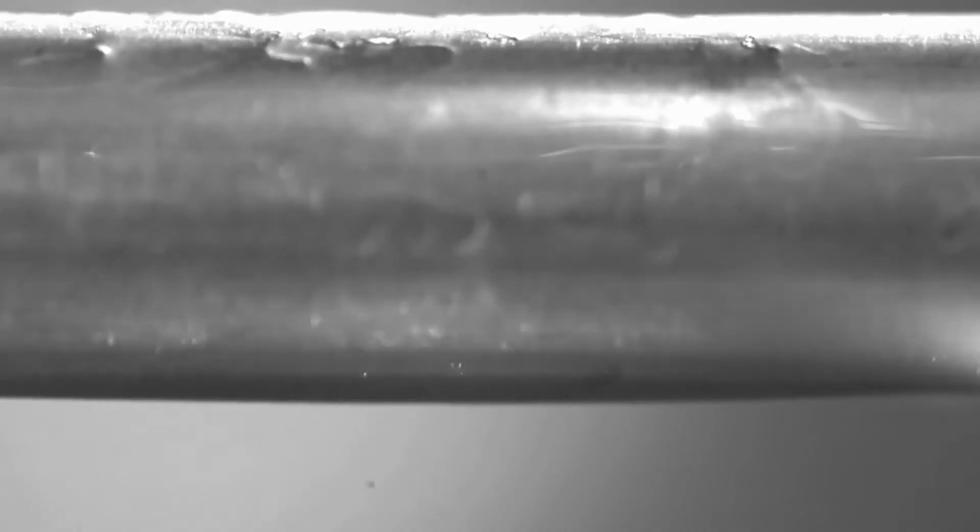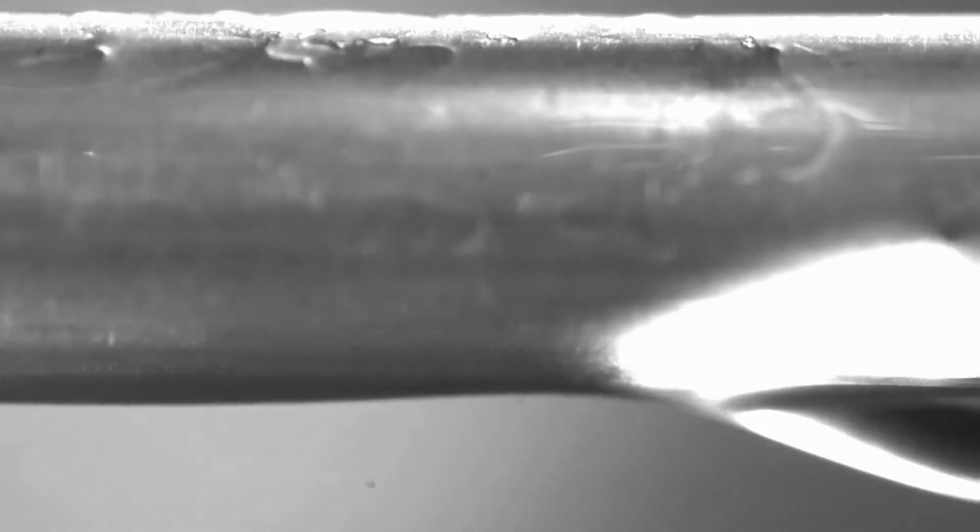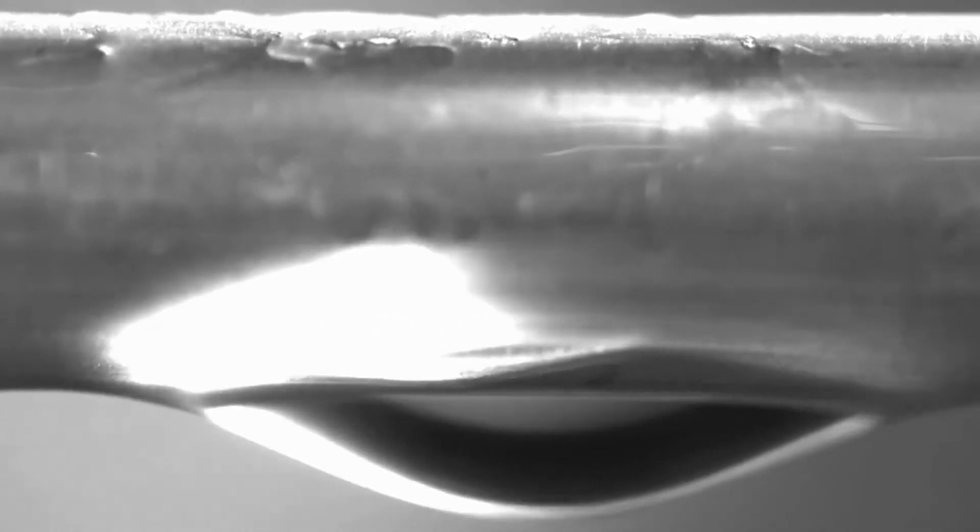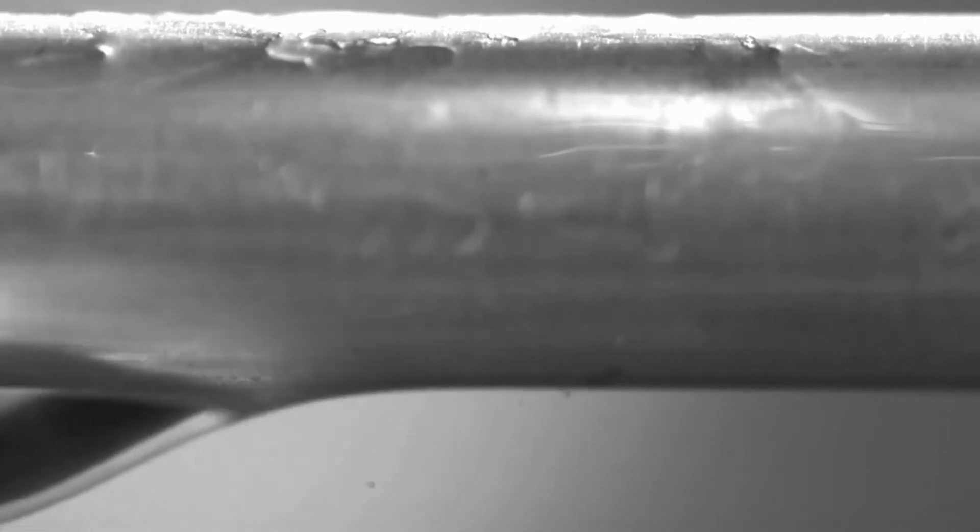By creating hydrophobic surfaces, either through chemical treatment or through surface patterning, researchers have been able to prevent this problem by encouraging water droplets to form and fall away.